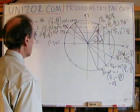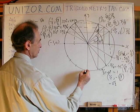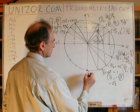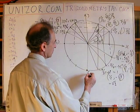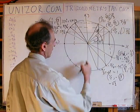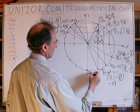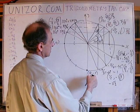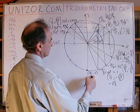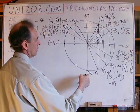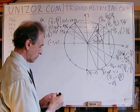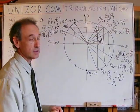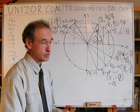Next is −π/2. The coordinates of this point are: abscissa = 0, ordinate = −1. You cannot divide by 0, so the tangent is not defined at −π/2.